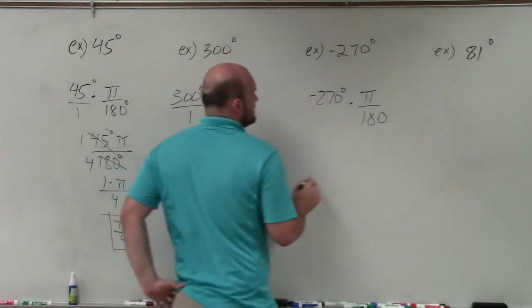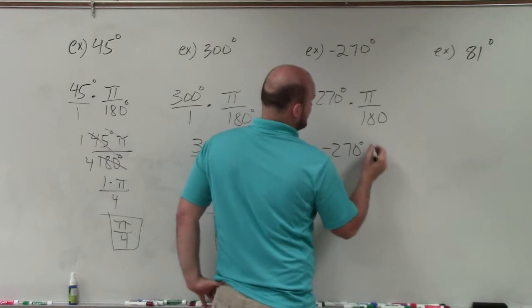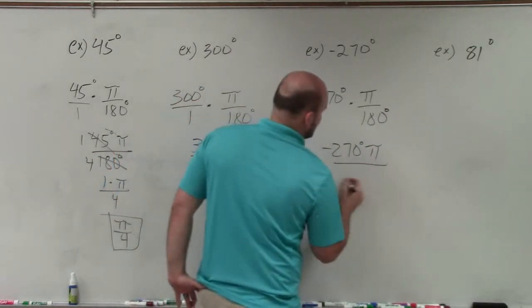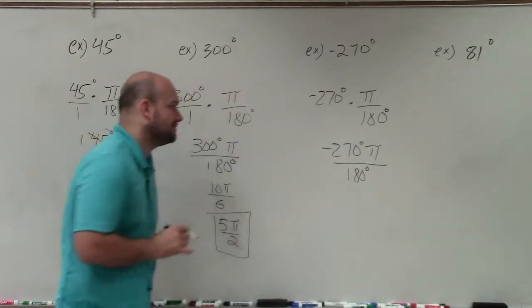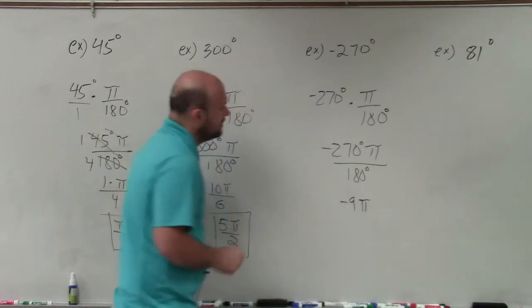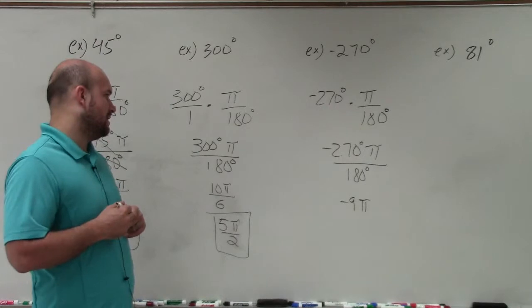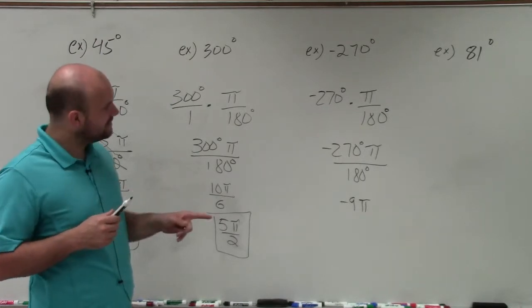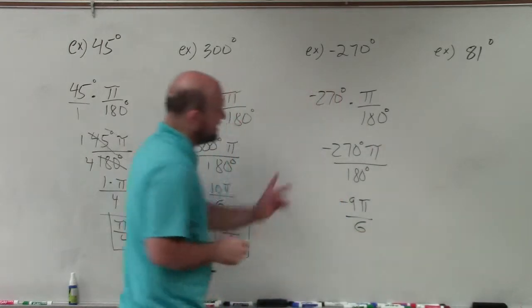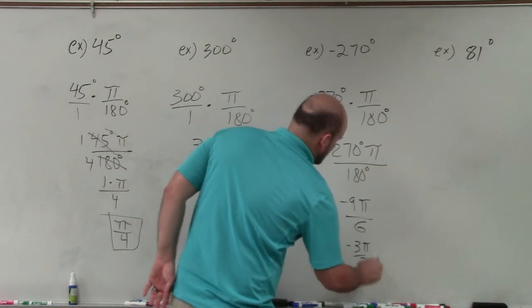Okay, so when I go ahead and divide 30 into the top, I'm left with negative 270 degrees times pi divided by 180 degrees. Now, I can do 30 up there, which is going to give me a negative nine pi. And then over 180, 30 is going to go in there six times. And then I can reduce that again, divide by three, and that's going to be a negative three pi over two.